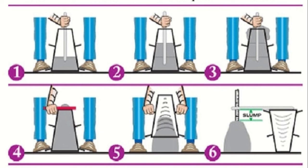Slump test is used for determining the workability of concrete and is basically a field test. First, we grease the slump cone, then fill one-third of the slump cone with the required concrete and compact it 25 times. We fill the next layer, compact 25 times again, then fill the third layer and compact 25 times. We level off the surface, lift the cone, and the amount of concrete that subsides is called the slump value.